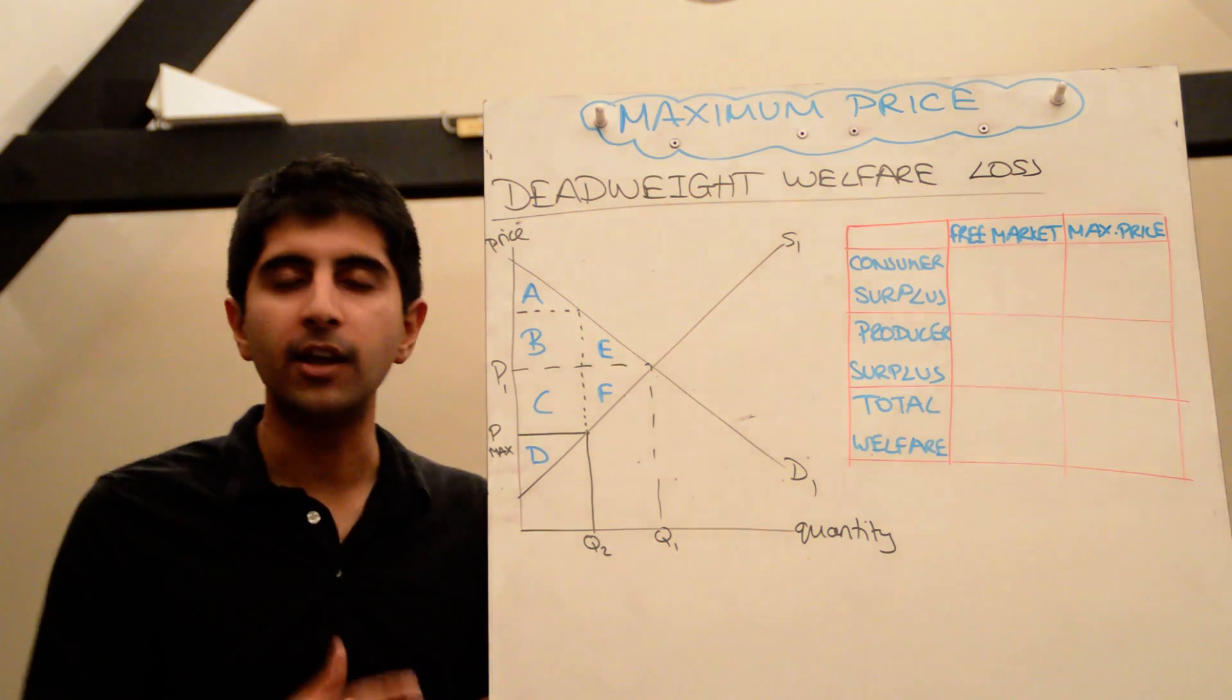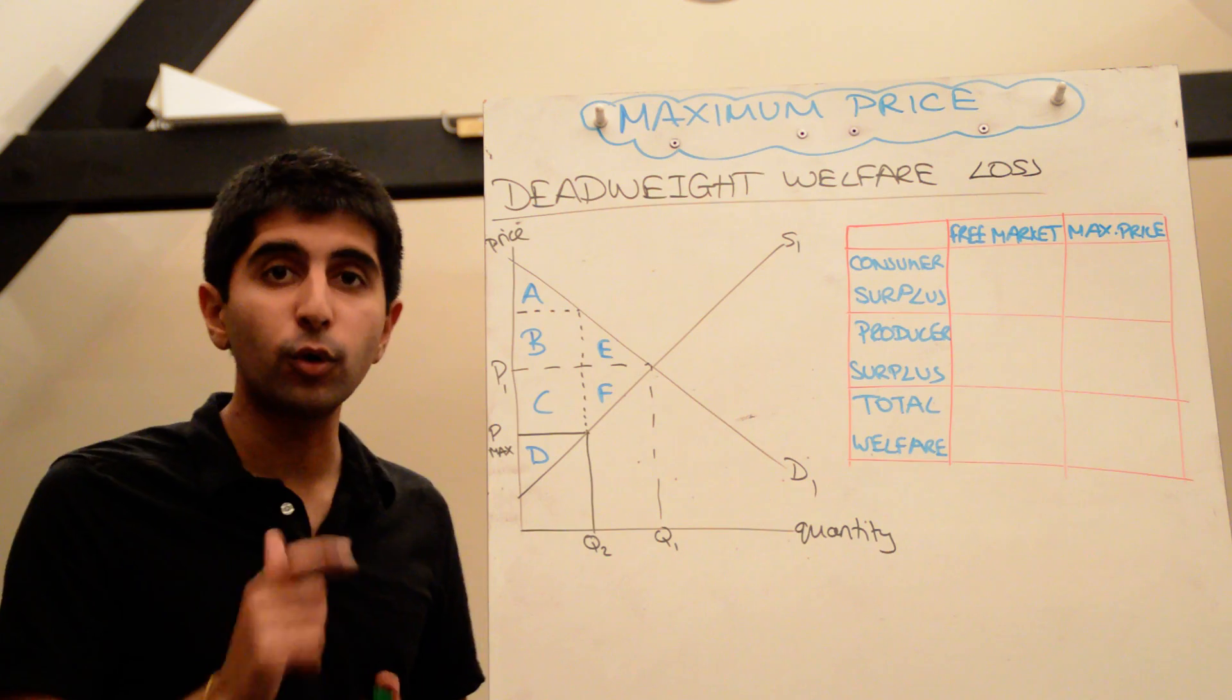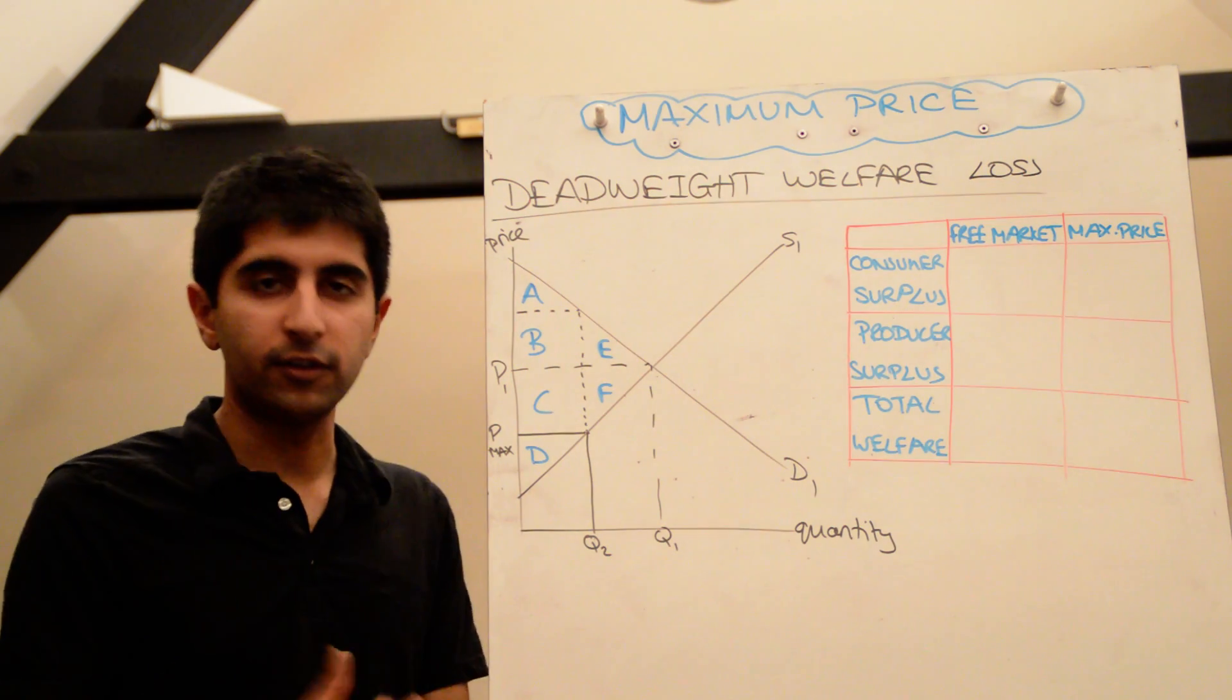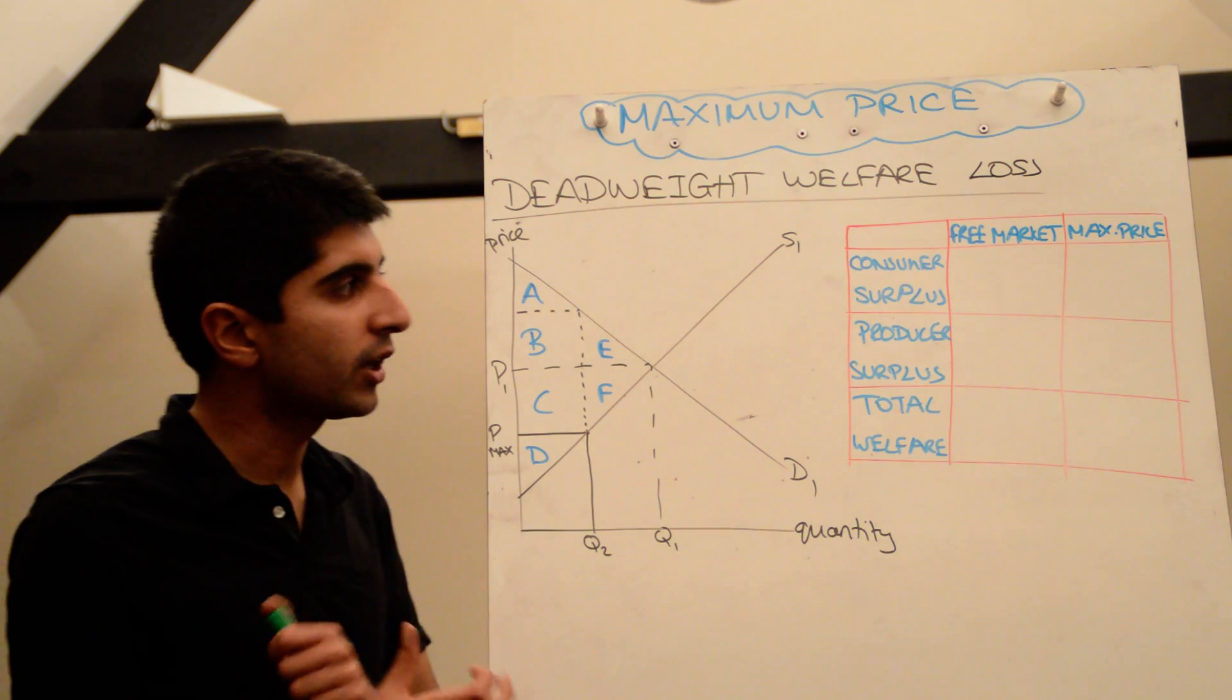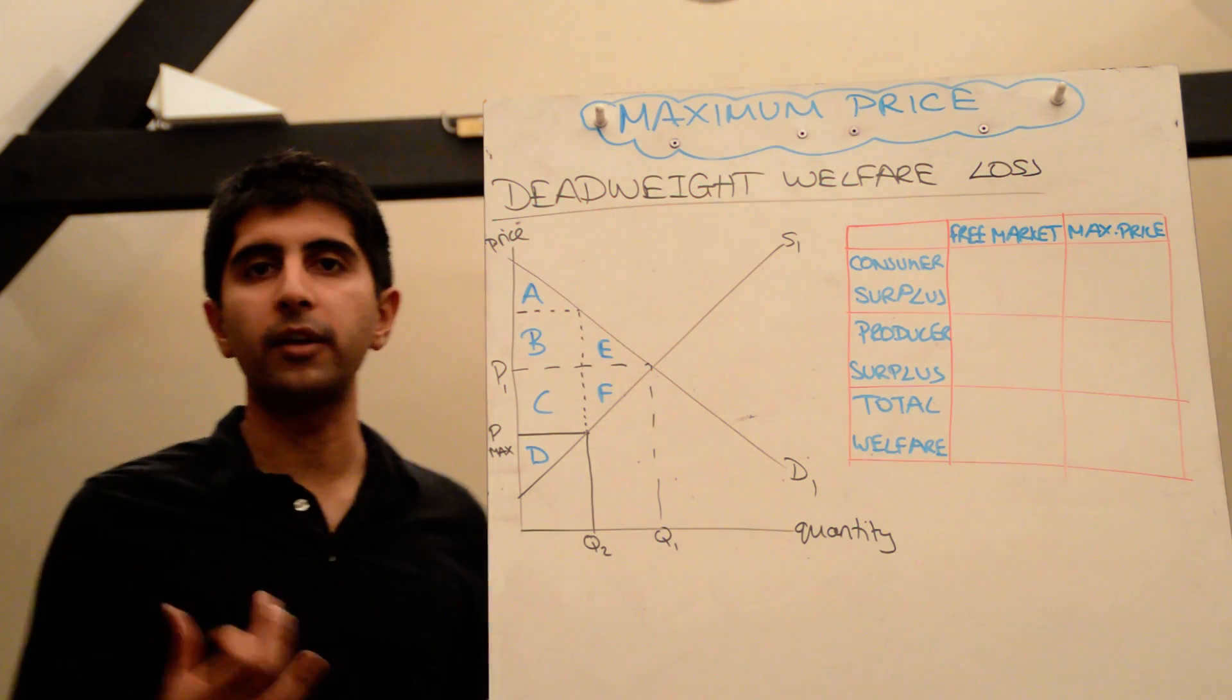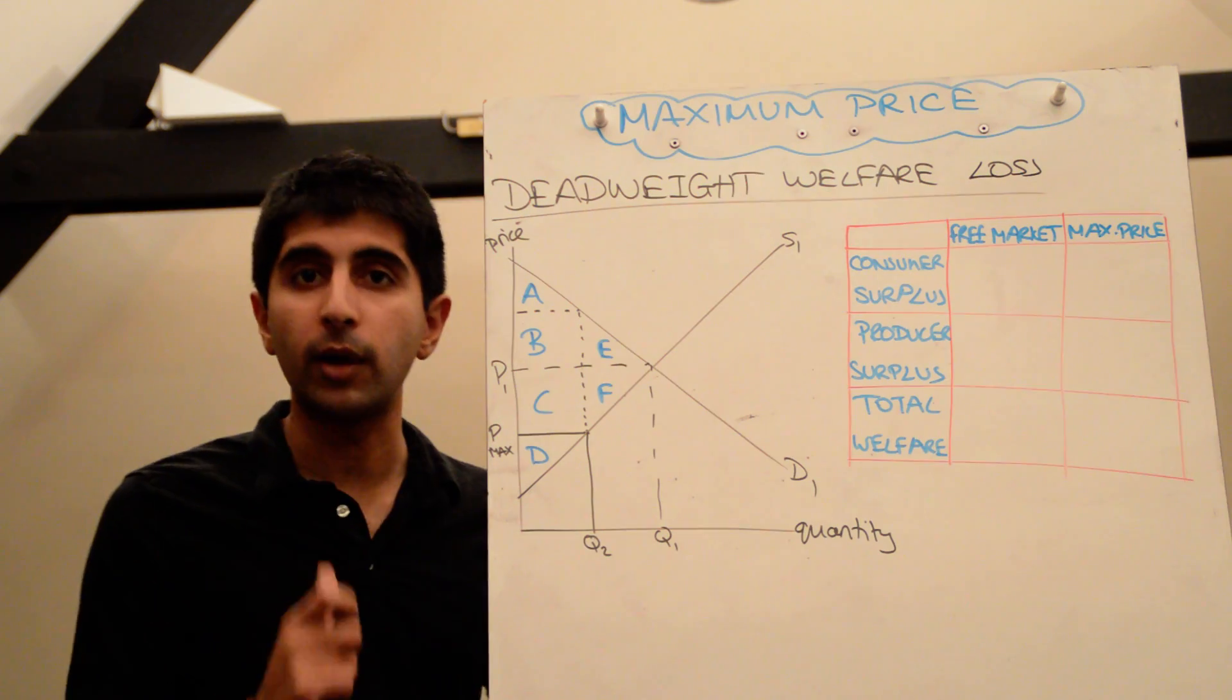In this video, I want to explain why a maximum price, when imposed in a market, can cause a deadweight loss. I'm going to do it in the usual way: compare what surplus and total welfare was in the free market before a maximum price, then look at what total welfare has ended up being as a result of the maximum price. You'll see that after the maximum price has been implemented, total welfare has actually fallen, implying that there is a deadweight loss somewhere.